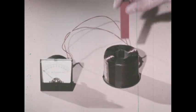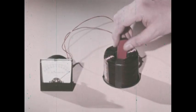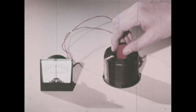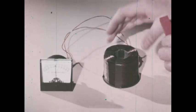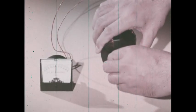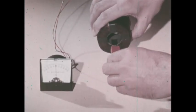You can test this yourself. Move a magnet into a coil of wire attached to a meter. How does the needle move? Quickly remove the magnet. Now how does the needle move? What happens when the coil is moved instead of the magnet?